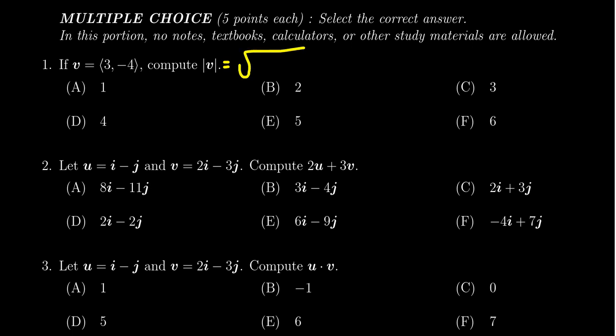We're going to get that the magnitude of the vector v is the square root of the horizontal component squared plus the vertical component squared.